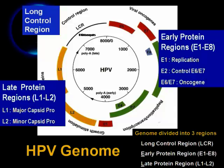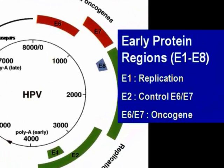If we look at HPV DNA, the DNA is circular in shape and divided into 3 main regions. Number one is the early protein region, containing E1, E2, E3, E4, E5, E6, E7, and E8 genes. This region is a row of nucleic acids or genes, and each of these genes encodes a specific protein with a specific function.